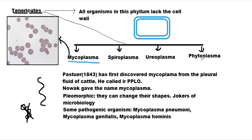Phytoplasma is another type of Tenericutes. They are parasites on plants — they use insects as vectors, and when insects sit on plants, the phytoplasma can go into the phloem tissue of the plant and become parasites there. That is why they are called Phytoplasma — 'phyto' means plant.